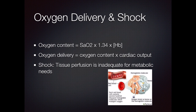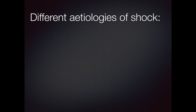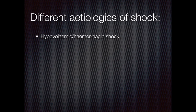Shock is defined as when tissue perfusion is inadequate for metabolic needs. The consequences can be irreversible tissue hypoxia and cell death. There are many different types of shock that can occur. The first, hypovolemic or hemorrhagic shock, is when there is inadequate circulating volume, and therefore what is circulating does not perfuse the tissues at a sufficient rate.